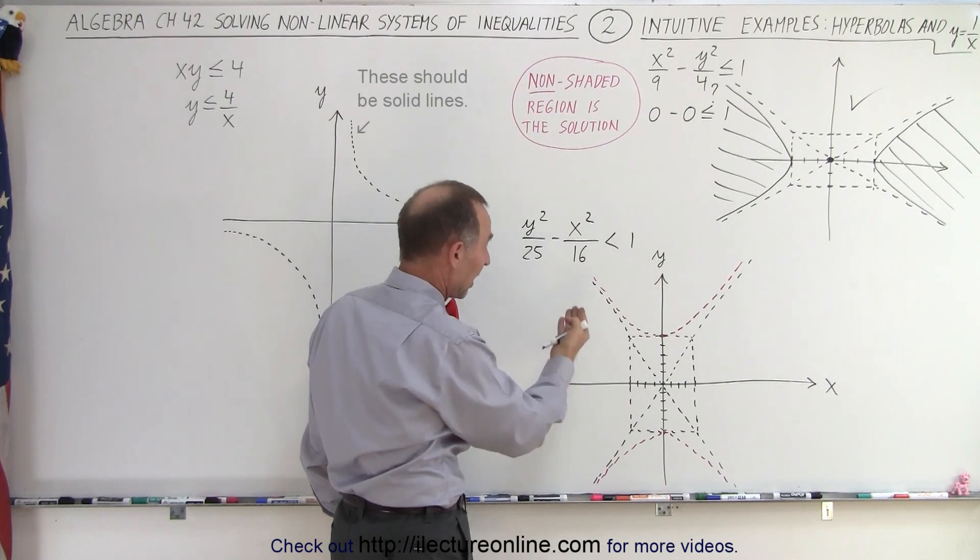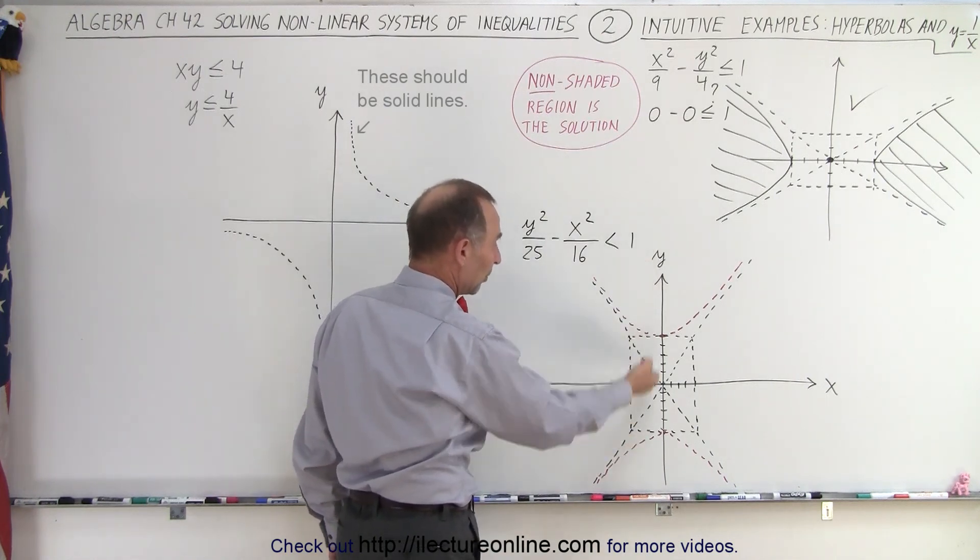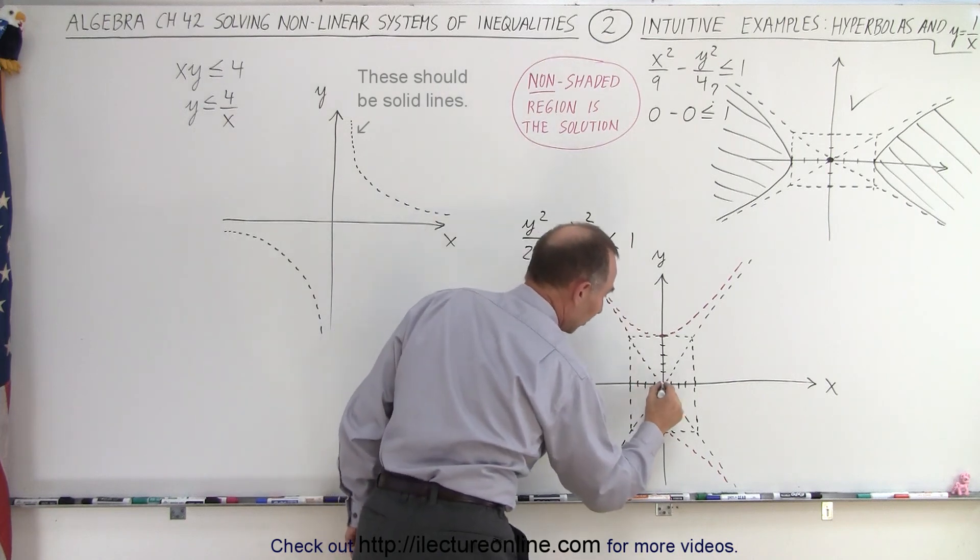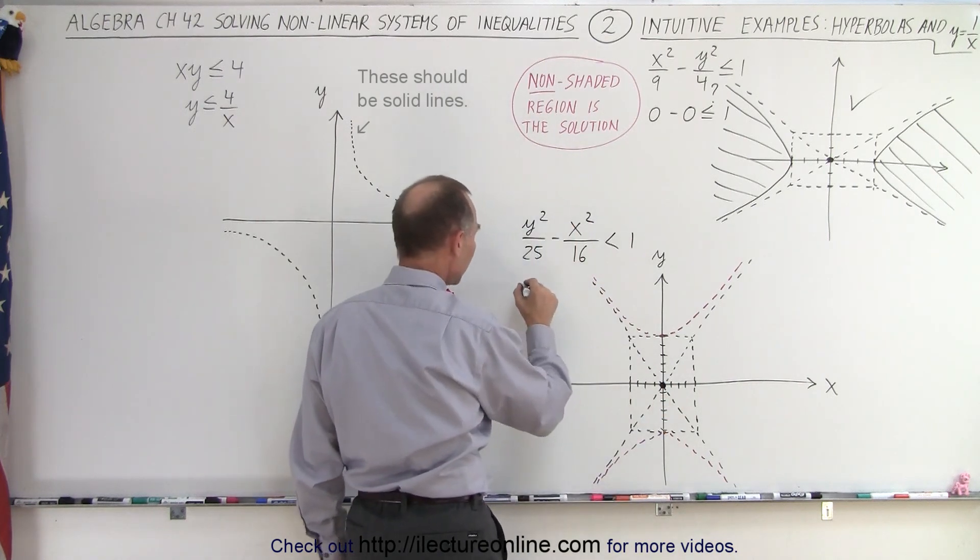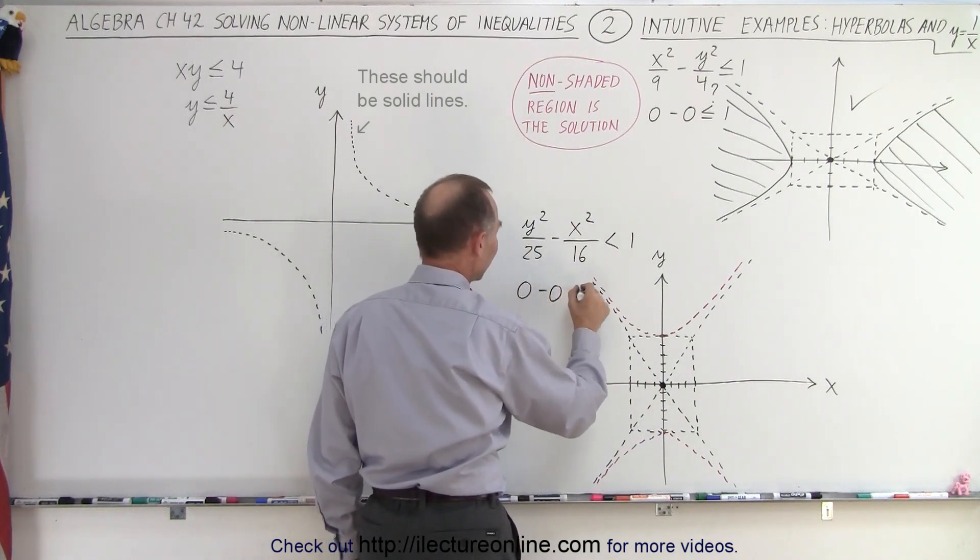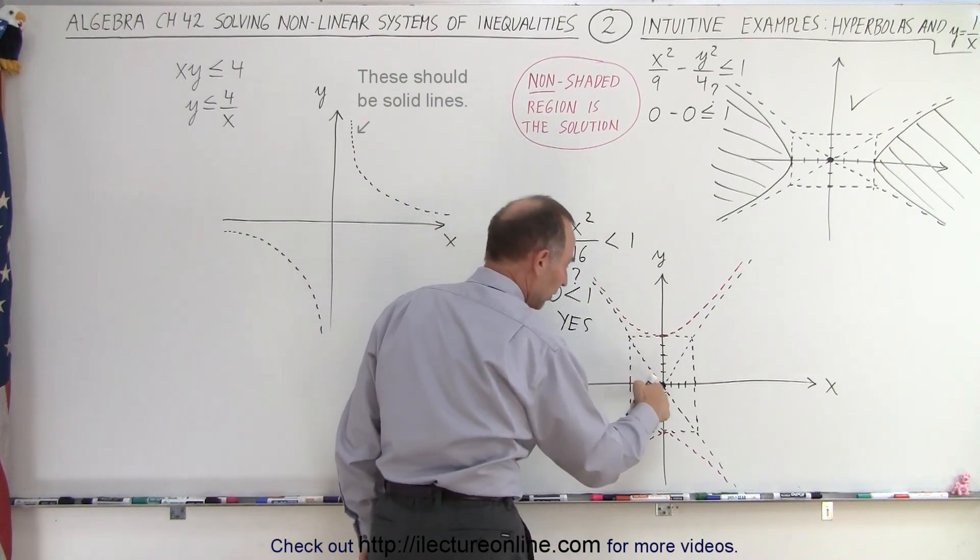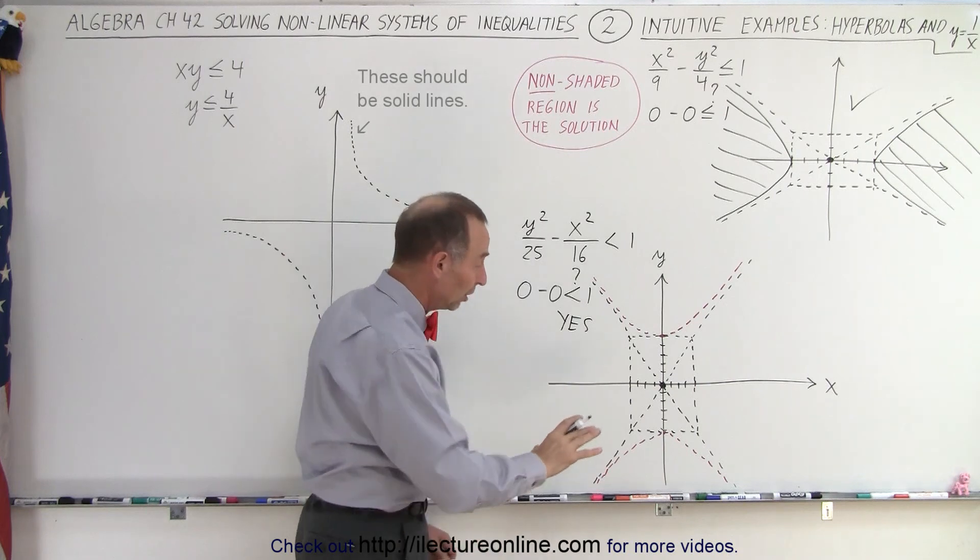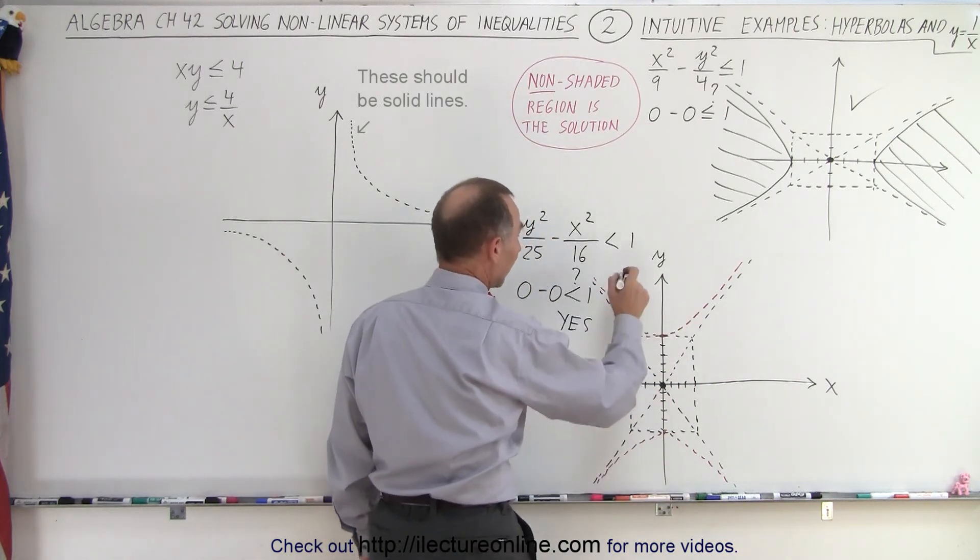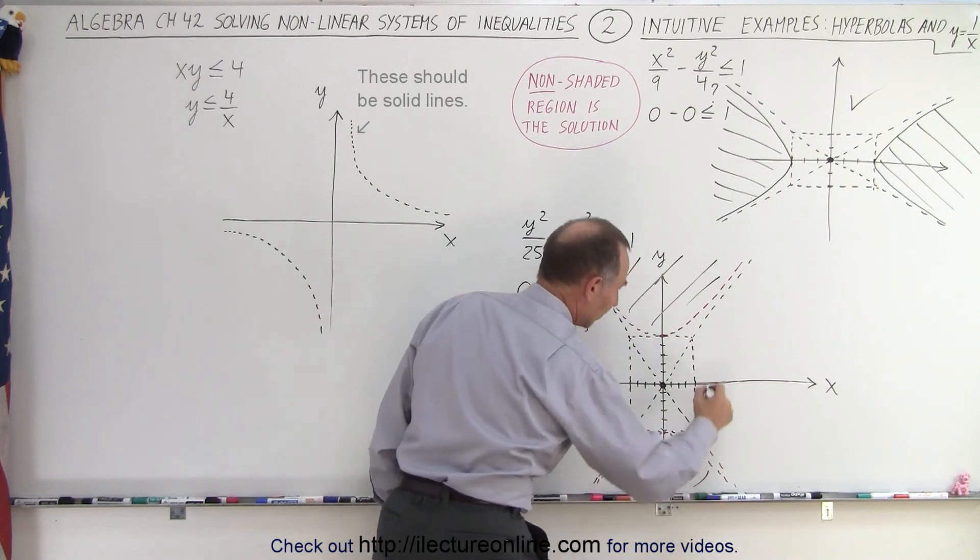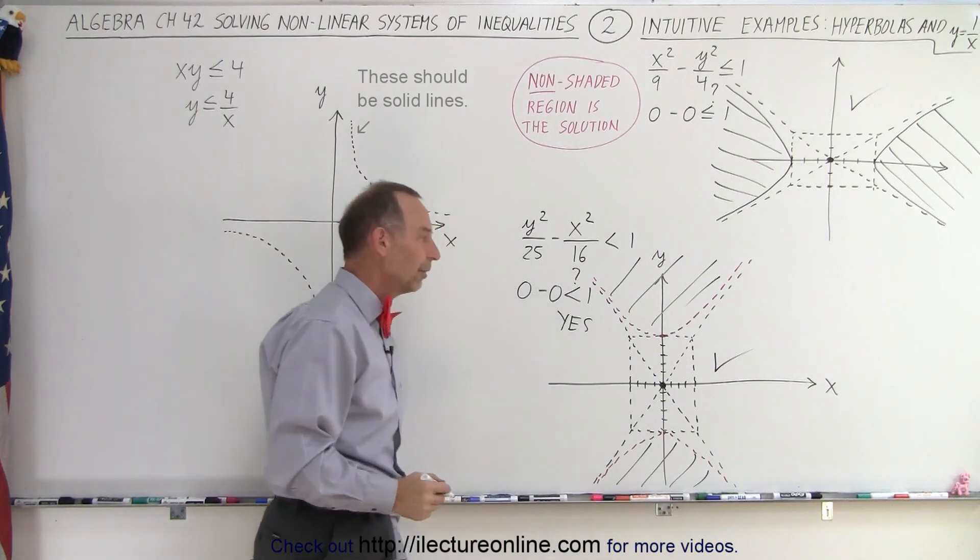Over here it's the same thing, but now the hyperbola opens up and down. Let's plug in the test point 0, 0. Is 0 minus 0 less than 1? The answer is yes. We picked the point that's part of the solution, which means these other two regions are not. We shade those out.